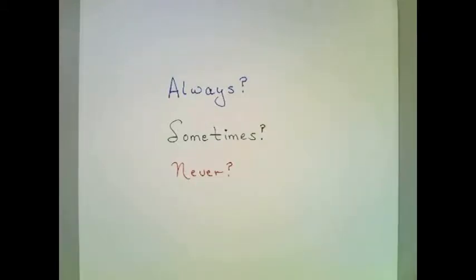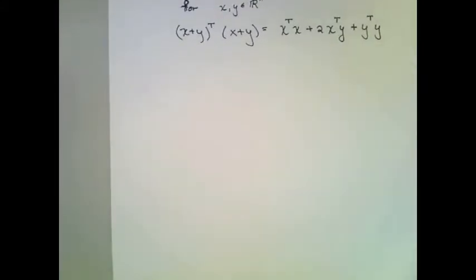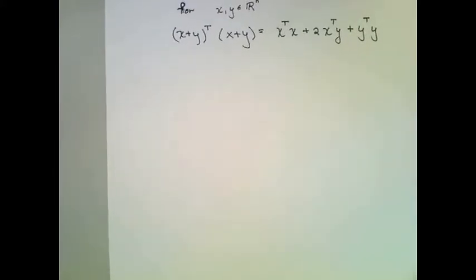Always, sometimes, never. For vectors x and y in R^n, is it always, sometimes, or never true that the dot product of (x + y) with itself is the dot product of x with itself plus 2 times the dot product of x and y plus the dot product of y with itself?